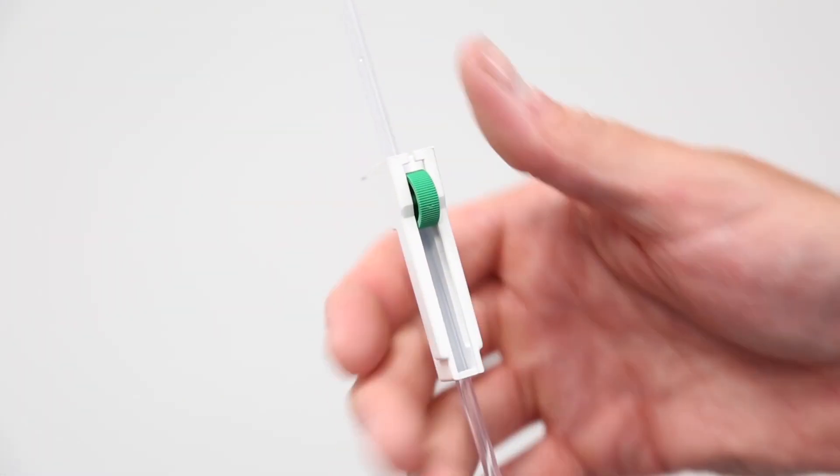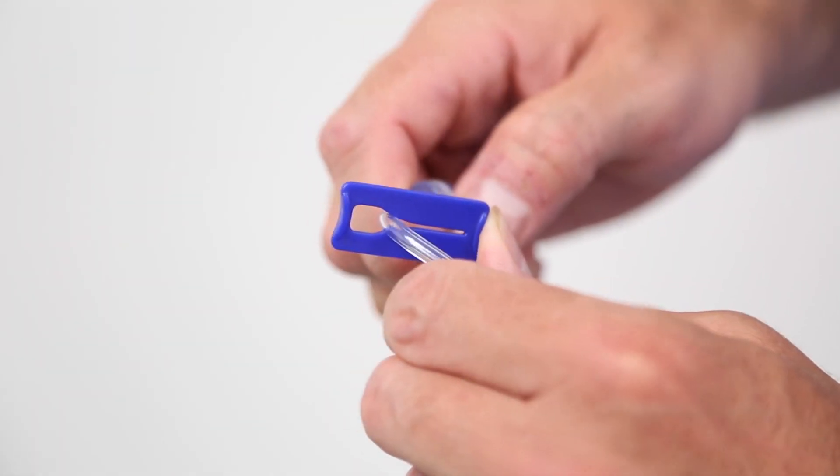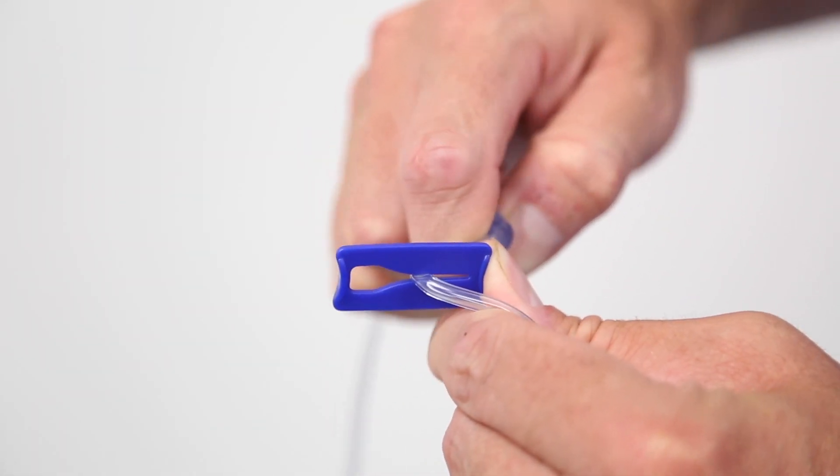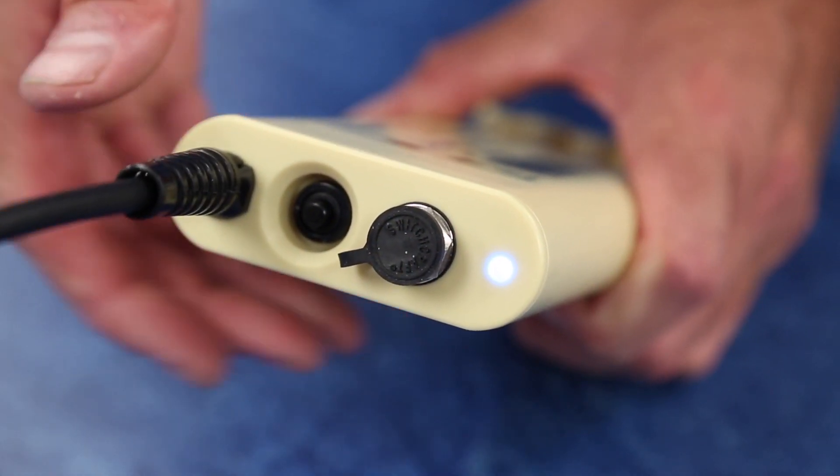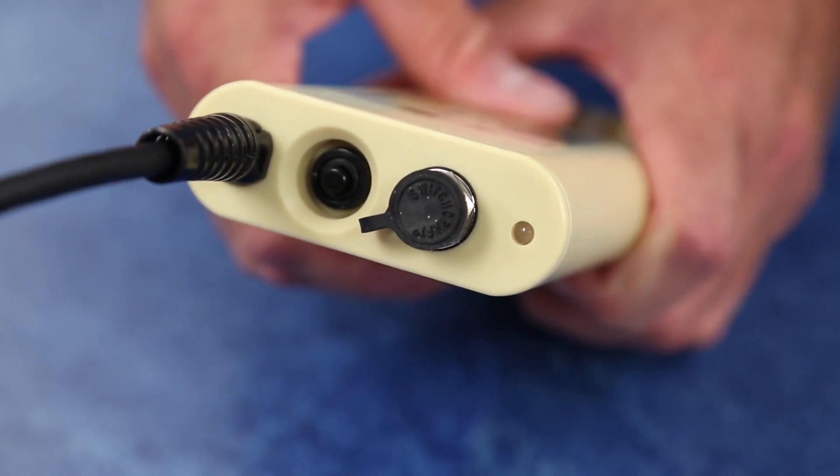At the end of the procedure, close the roller clamp on the administration set and then close the input end of the disposable set using the blue side clamp. Turn off the heater by pressing the on-off button on the battery housing.